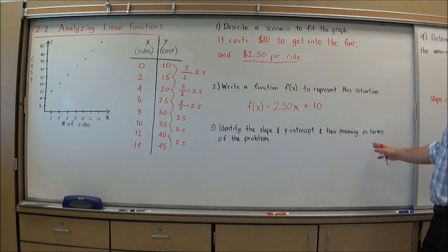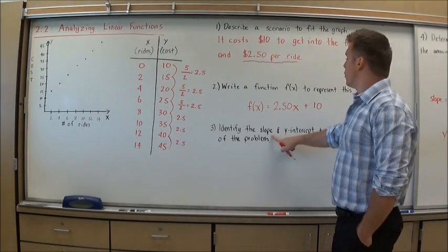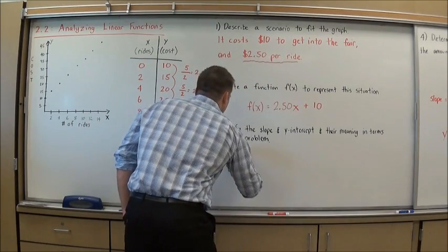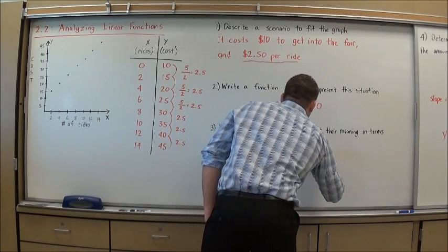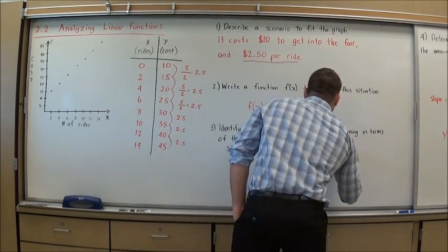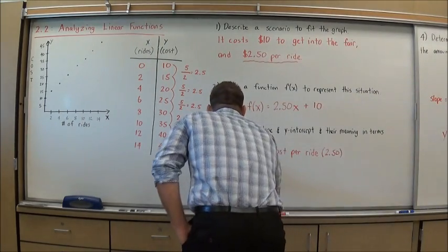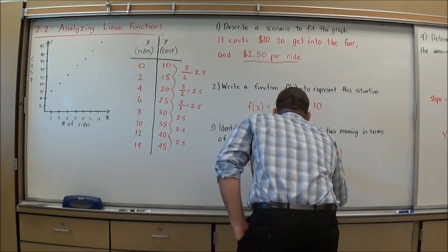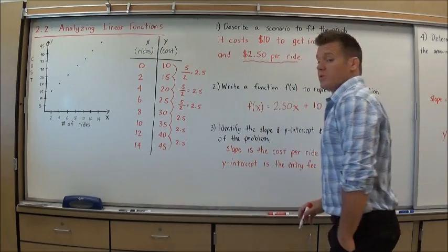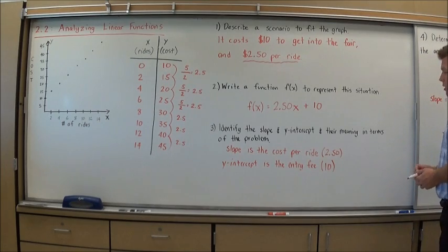It says identify the slope and y-intercept and their meaning in terms of the problem. The slope is the rate of change. In this case, it's our rate. The slope is the cost per ride, and that was $2.50. The y-intercept in this problem was the starting point. In terms of the problem, I would call that the entry cost. For the situation we wrote, we're assuming there's an entry fee, it's the $10. So I now have a real complete understanding of the situation and mathematically how these different parts of this function determine the cost.